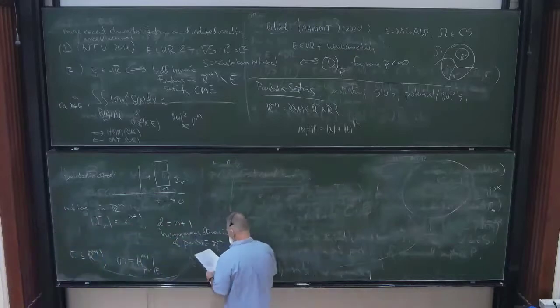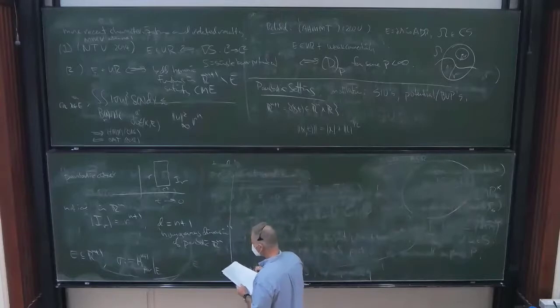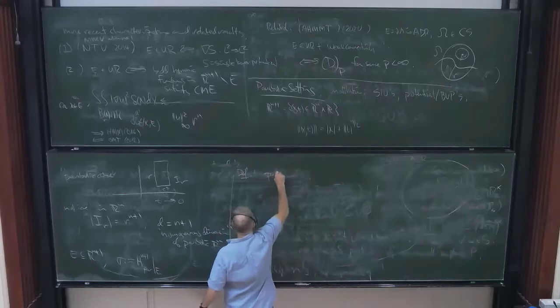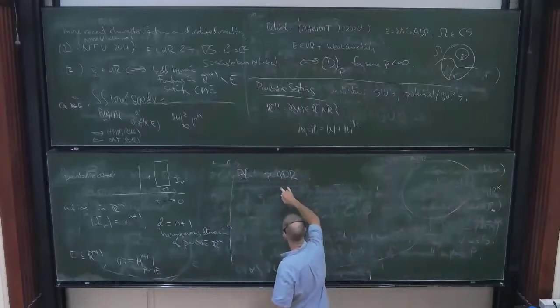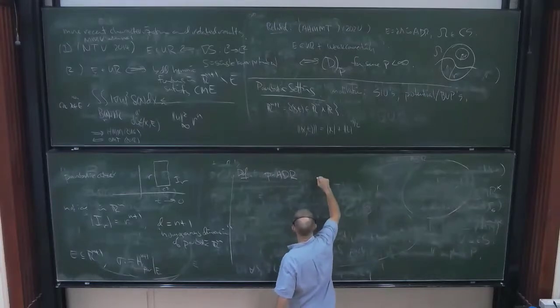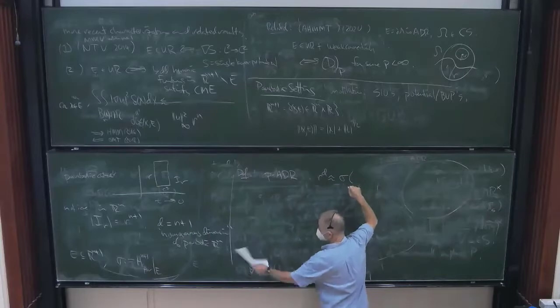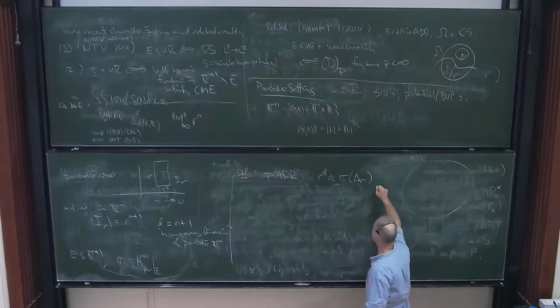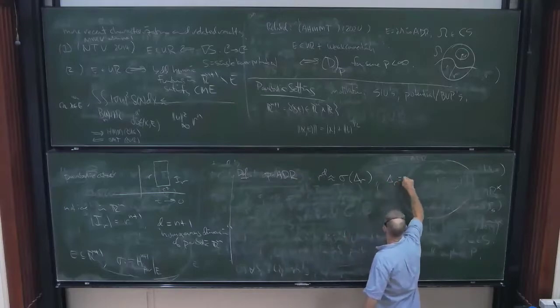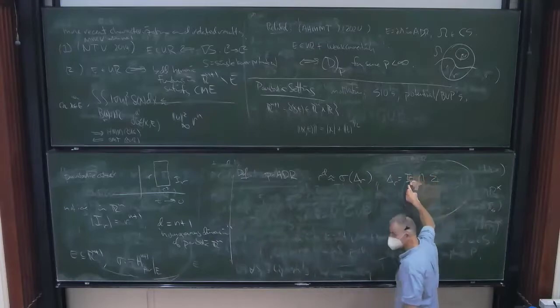So I'm going to let, from henceforth, d equals n plus 1 is going to be the so-called homogeneous dimension of parabolic R^n. And then for a codimension one set E contained in parabolic spacetime R^{n+1}, we're going to define sigma on E to be parabolic Hausdorff measure of parabolic dimension n plus 1 restricted to E. And this means this is defined in the same way as standard Hausdorff measure, except that you cover by parabolic cubes rather than standard cubes, or by cubes whose diameter measured in the parabolic distance is at most a certain size. And then the power that you raise the diameter to is n plus 1.